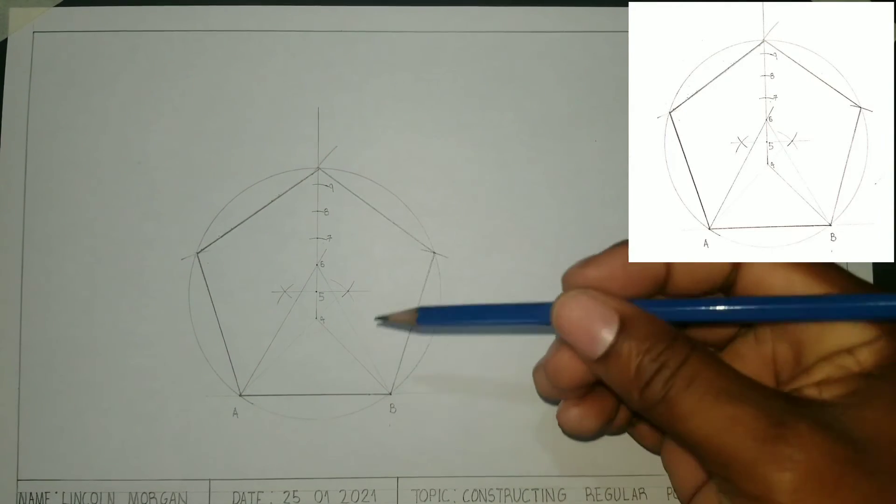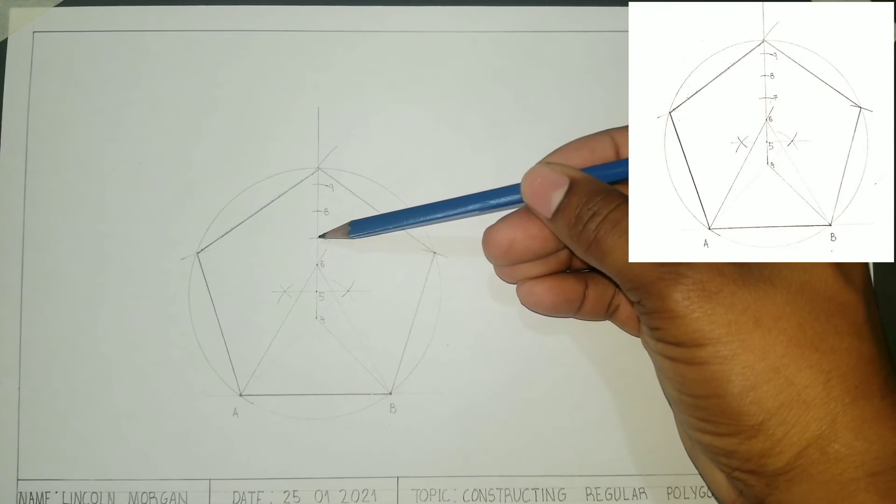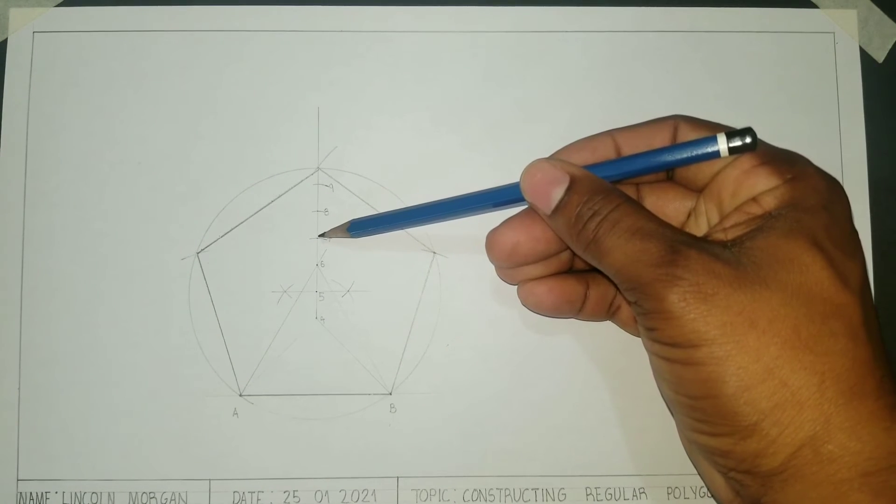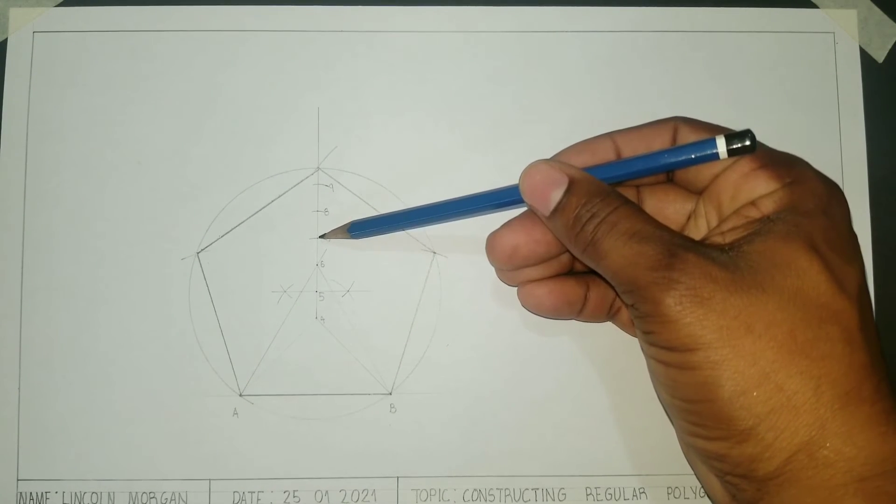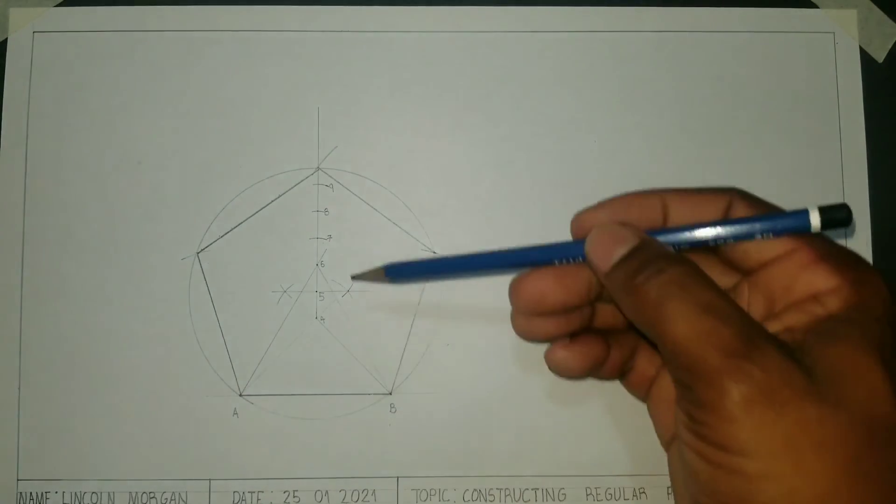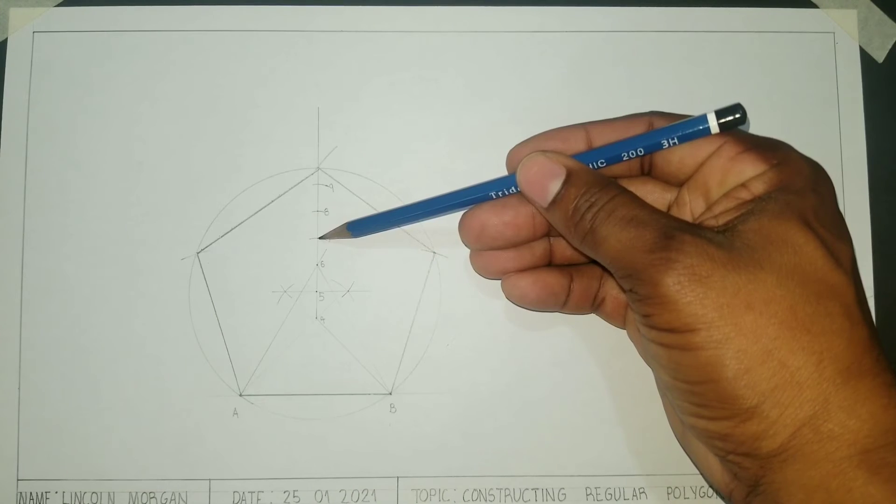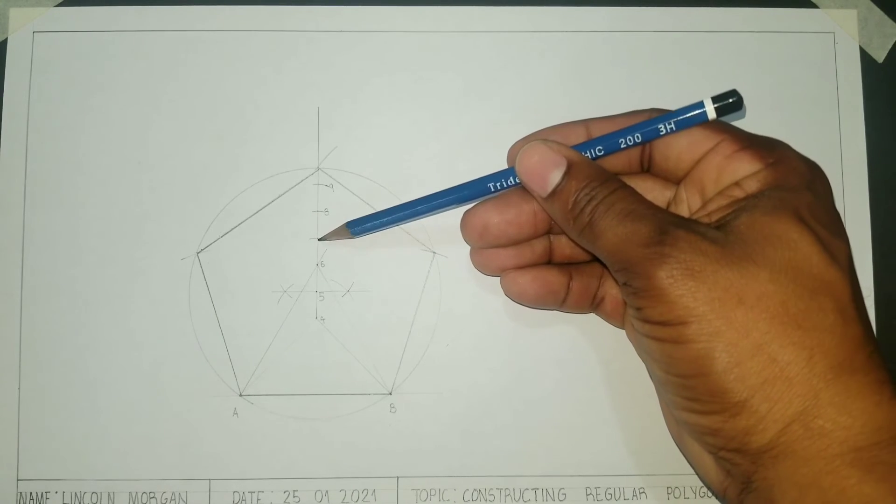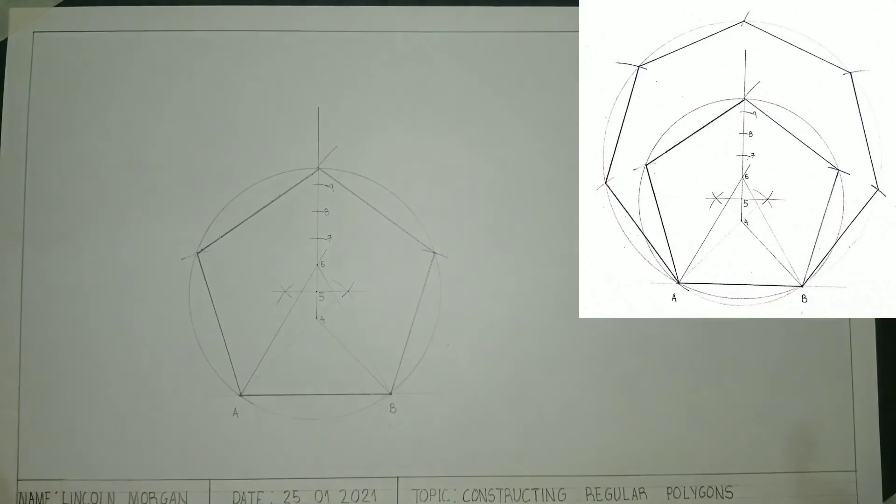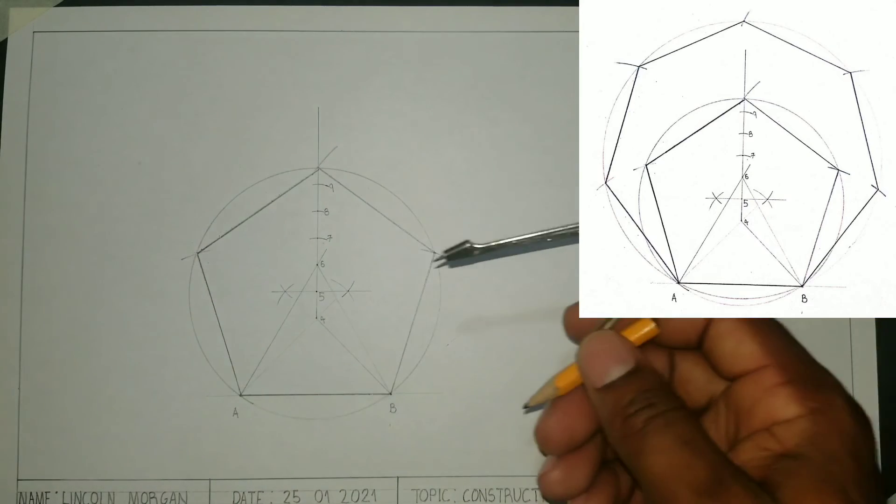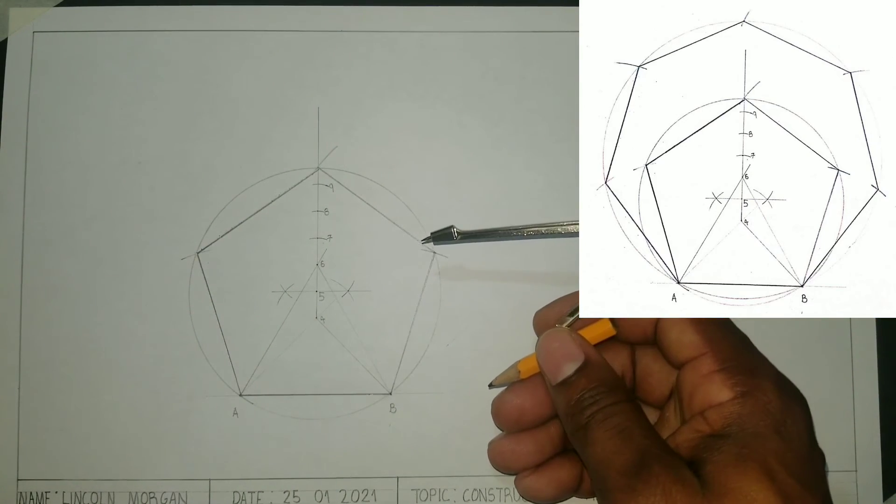If we wanted to construct a seven-sided regular polygon, which is called a heptagon, we would open our compass from point 7, then put our compass to B and scribe a circle. I will now construct a heptagon.